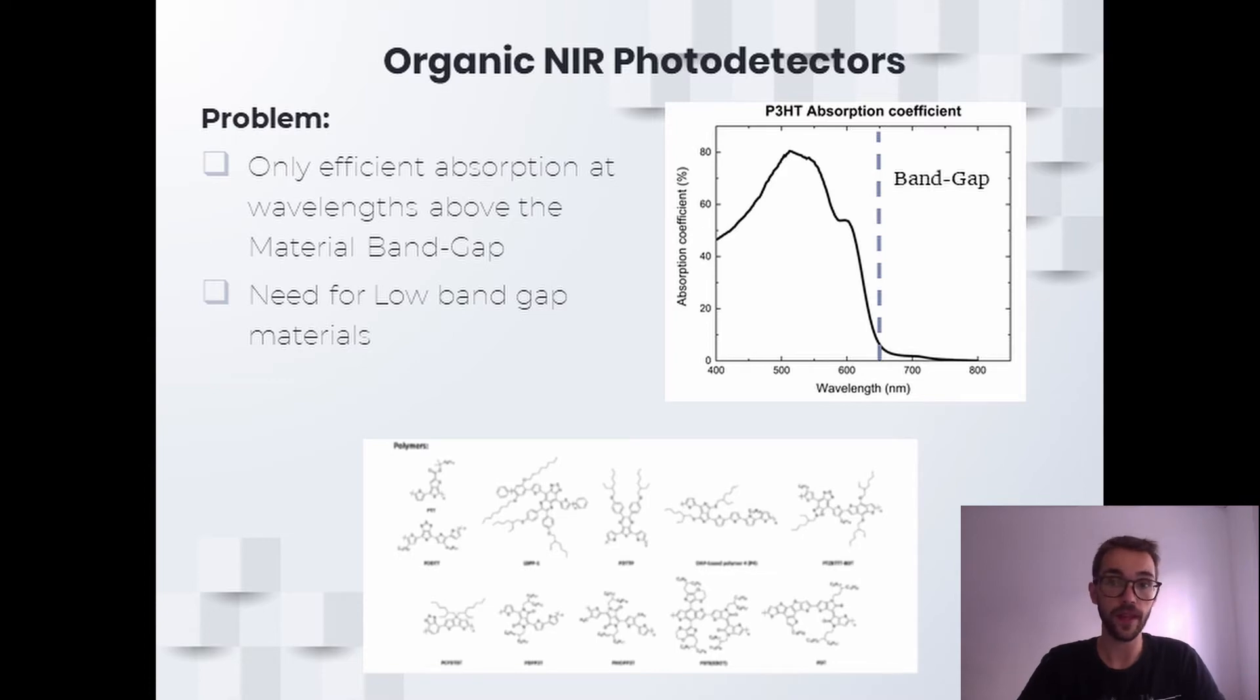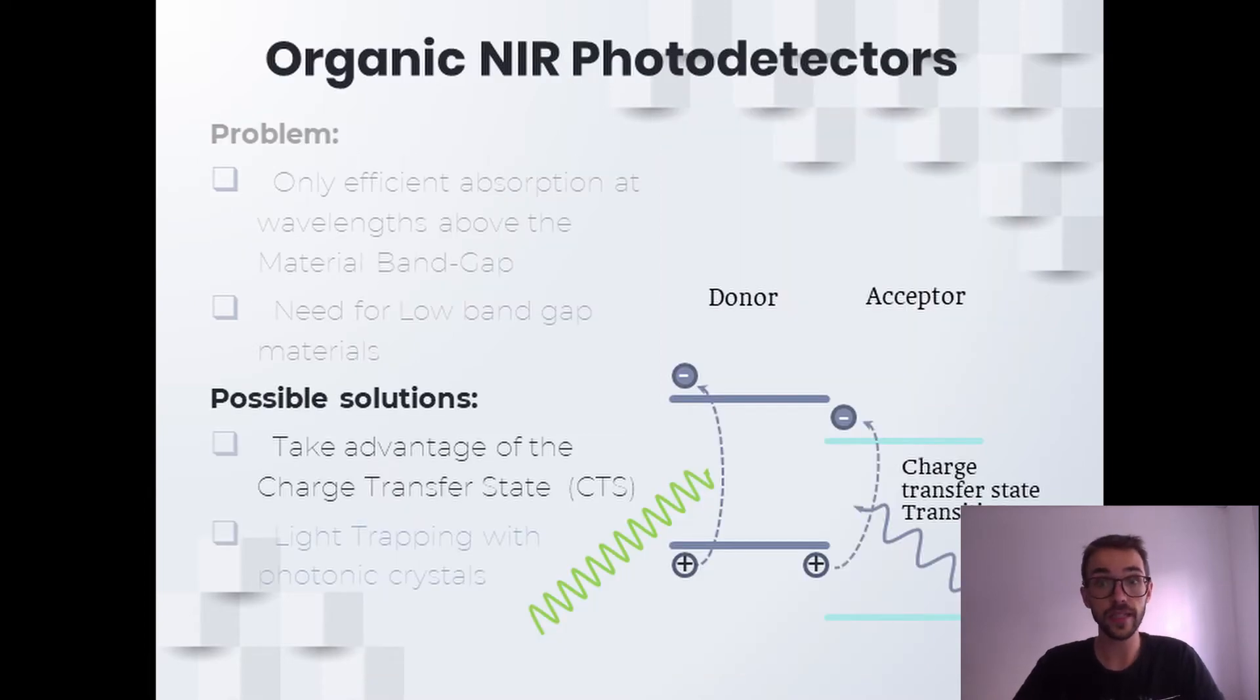A possible solution for that limitation is to take advantage of the charge transfer state absorption, which usually has a lower transition energy than the singlet state absorption, so it can absorb deeper into the near-infrared. However, the charge transfer state absorption strength is around two orders of magnitude lower than the singlet absorption due to the fact that it's an intermolecular state.